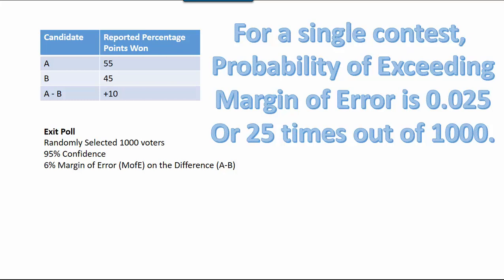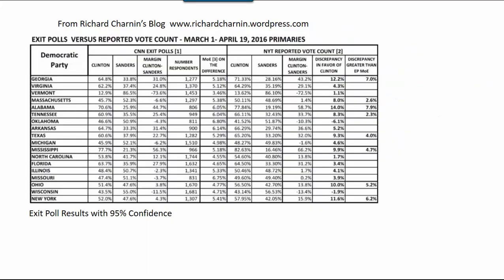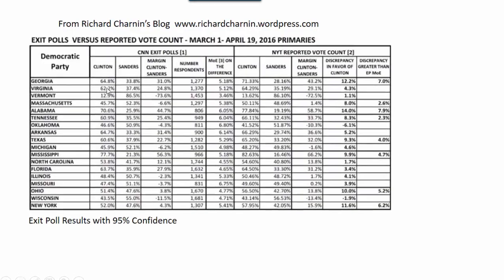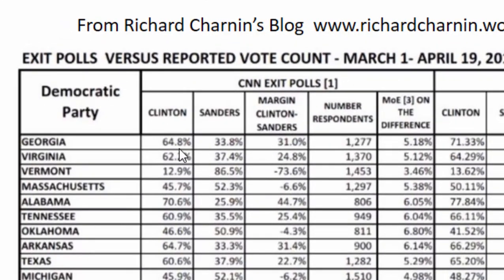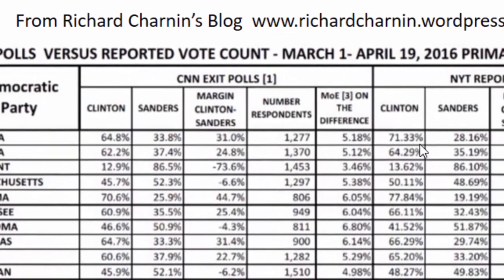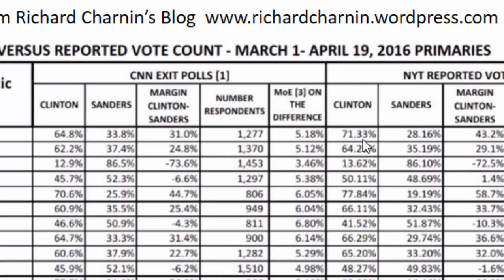Let's look at some actual results from a Democratic primary in 2016. In Richard Charnin's blog, he discusses the results of the Democratic primary in 2016 in the Georgia contest. Clinton was predicted to win 64.8% of the votes, while Sanders was predicted to win 33.8%, meaning a difference of 31.0%. The results reported by the New York Times were different: Clinton had 71.33%, Sanders 28.16%, with a difference of 43.2% — much greater than the 31% difference expected based on the exit polls.